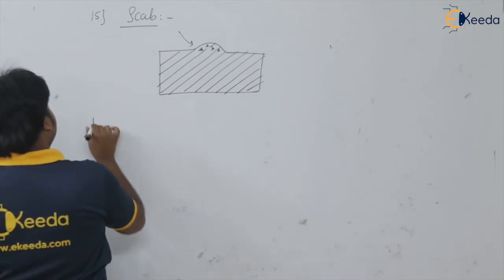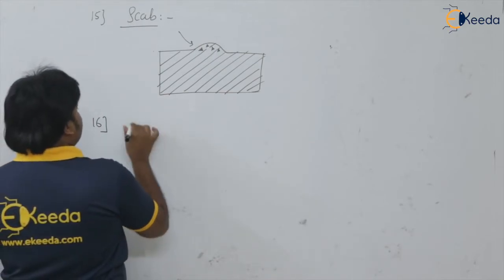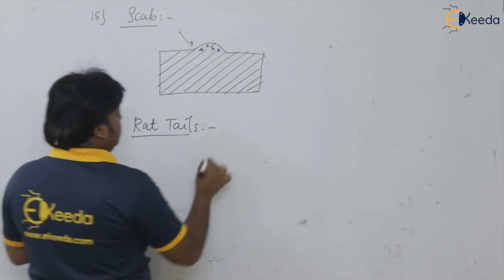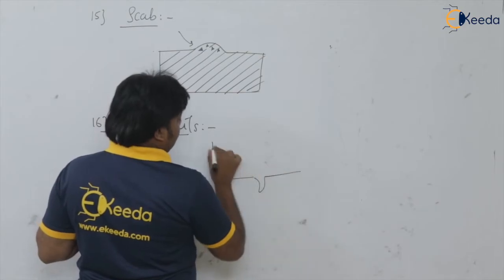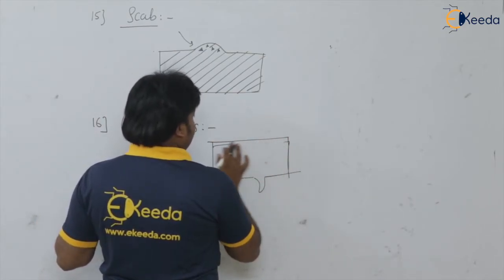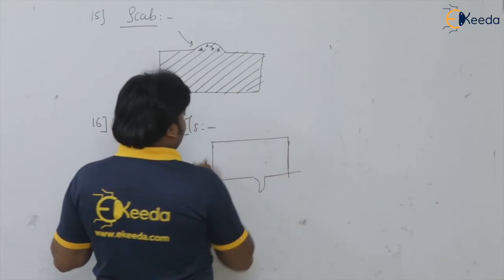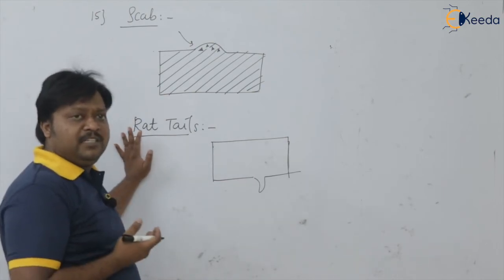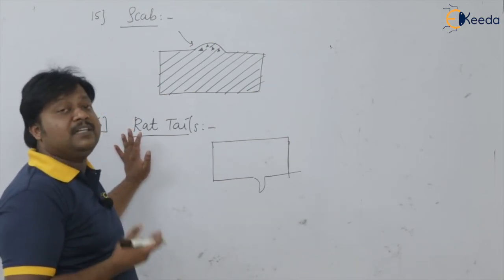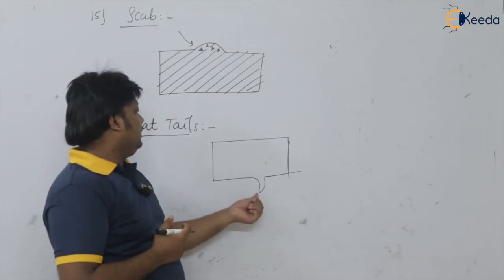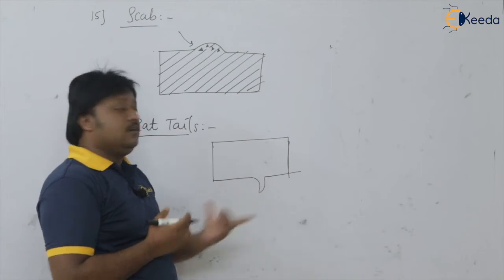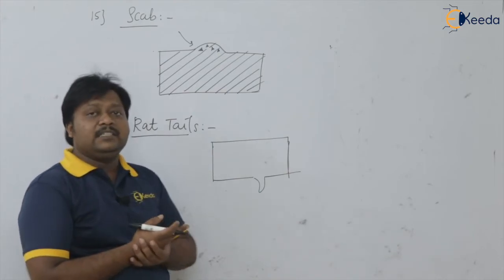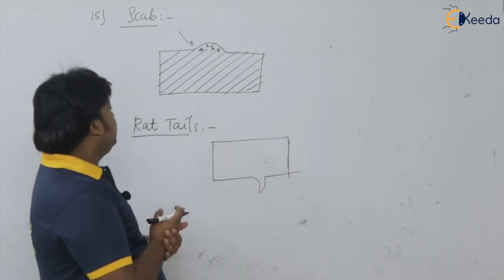Then we are having the rat tail defect. This is rat tail-like projections onto the casting. These rat tails can be found whenever we are doing investment casting or using wax as a pattern with the green sand. This kind of projections we can see onto the castings, which have a rat tail-like structure — that's why this defect is known as the rat tail defect.